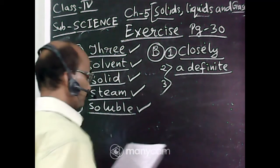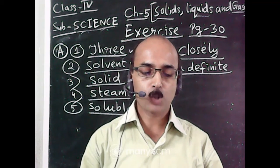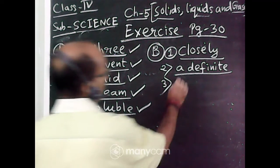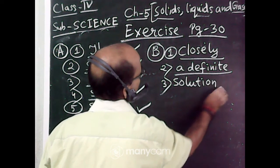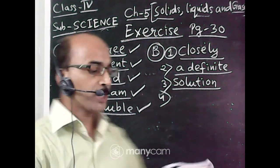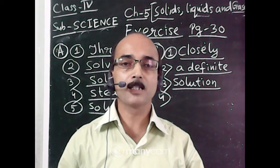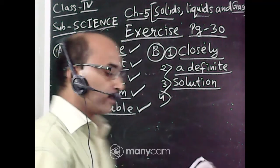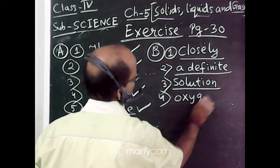Number three: the solute and the solvent together form a solution. Number four: fishes breathe in dash dissolved in water. This is an aquatic animal so it breathes in oxygen, dissolved oxygen. Answer is oxygen.